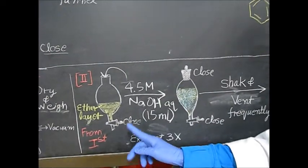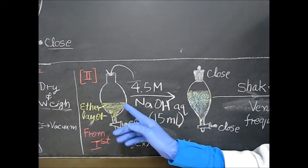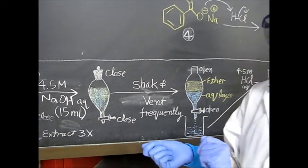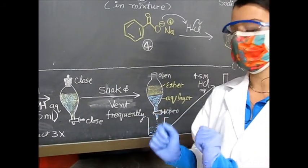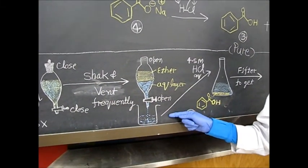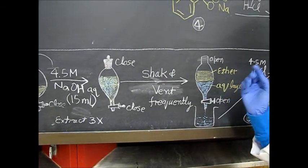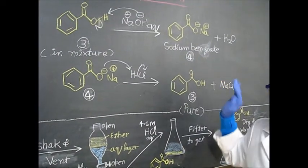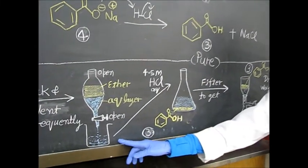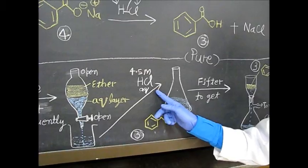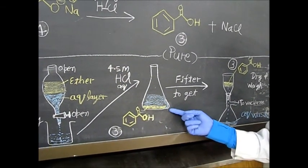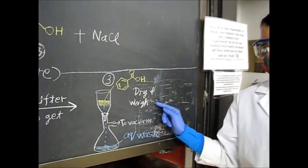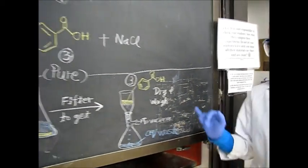In our separatory funnel, we will add 4.5 molar NaOH, 15 milliliters, and shake and invert the separatory funnel. Once shaking multiple times, we will separate out the aqueous layer and leave the ether layer. We will repeat this extraction two more times to ensure all of the sodium benzoate is created and separated out. After collecting our pool of sodium benzoate, we will acidify it with 4.5 molar HCl, which will leave a precipitate at the bottom of our flask. We will then filter, dry, and weigh the precipitate using vacuum filtration.